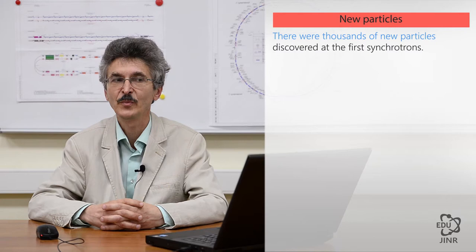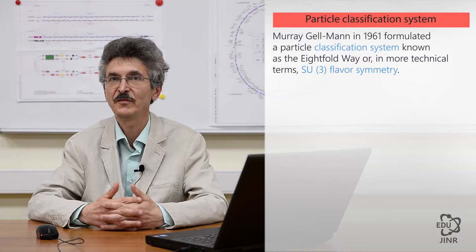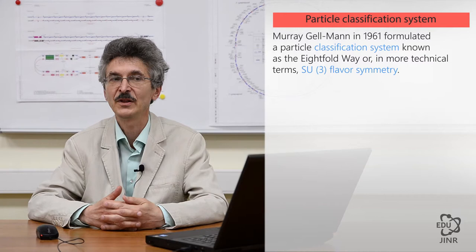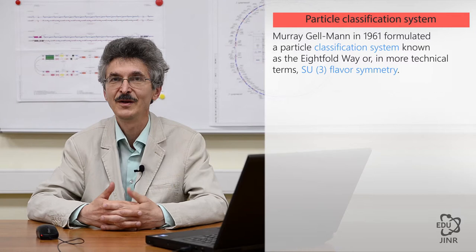In 1961, a theoretical physicist Murray Gell-Mann suggested a classification system of particles which had already been discovered by that time. Initially, he looked at a classification system.